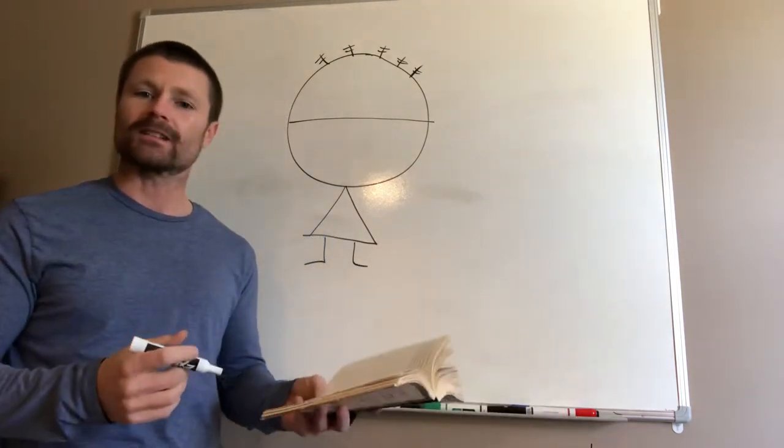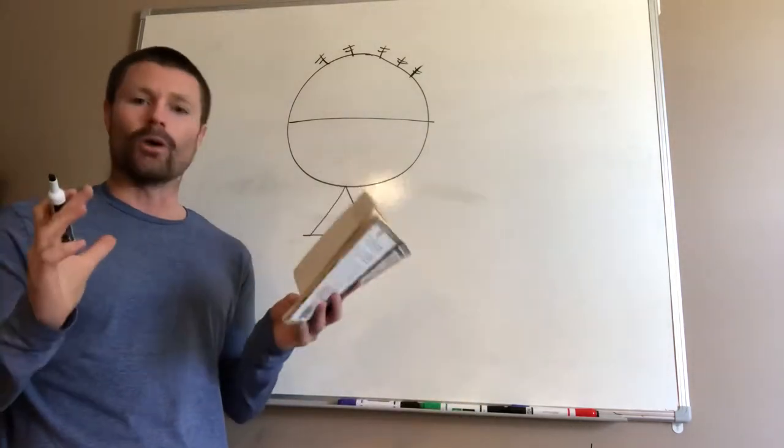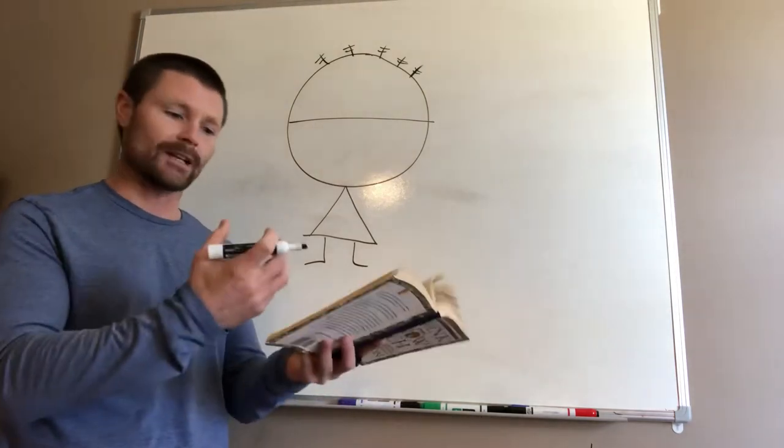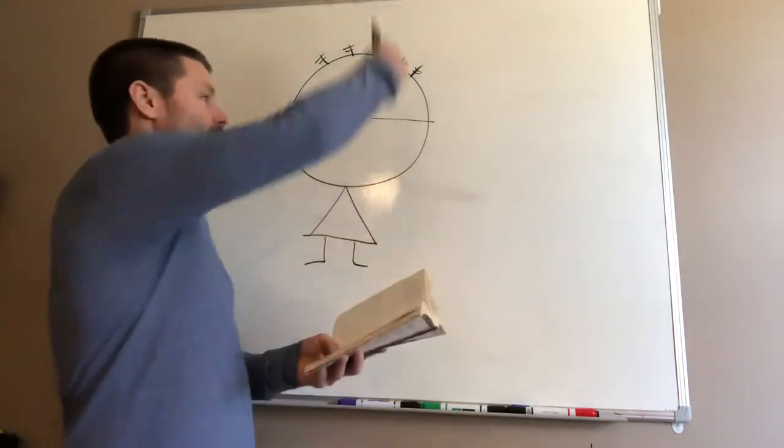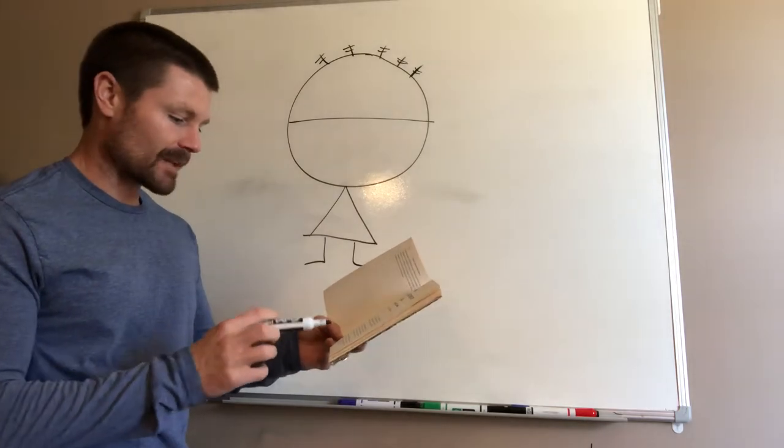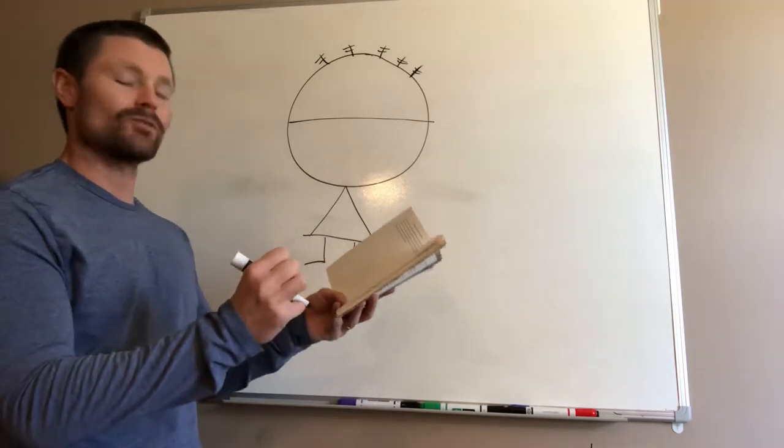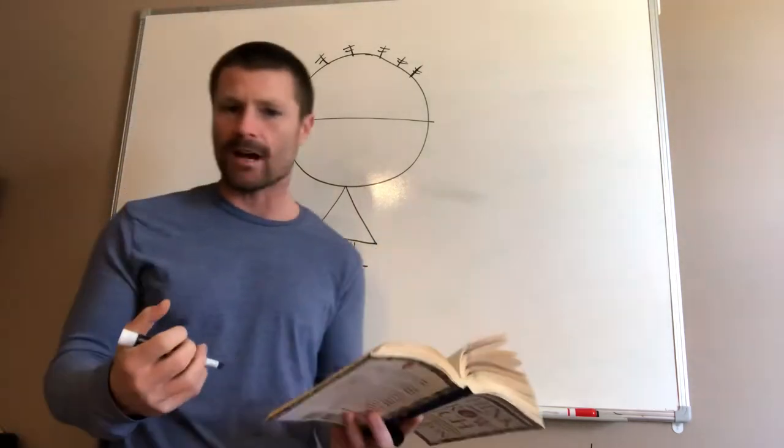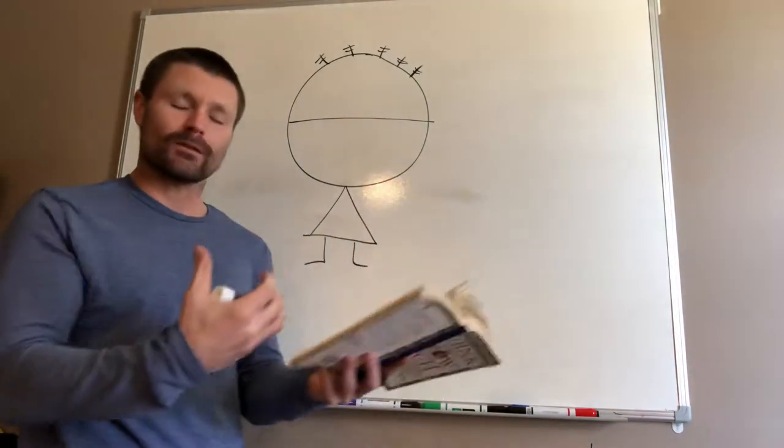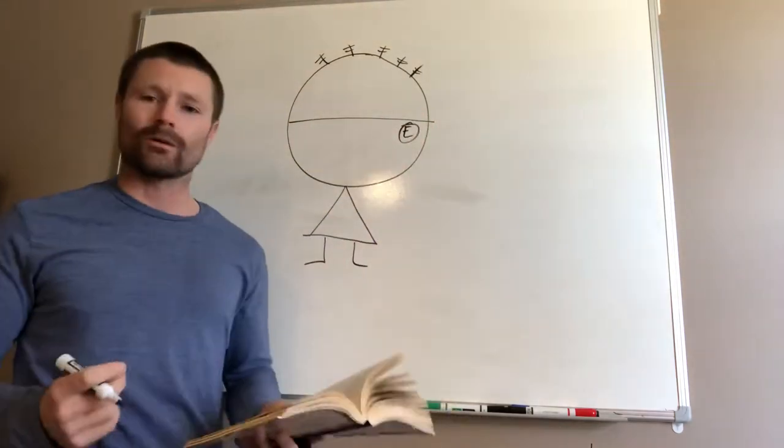You can voluntarily plant into your subconscious mind any plan, thought, or purpose. When we go back to the chapter on desire and we look at the six steps, that's exactly what we're doing. Through habit, we're taking our goal, we've written it out. If you followed the six steps, you're going to write it out and we're looking at that every day. Over habit, we're planting that into the subconscious mind. But I want you to get this: he says that the subconscious mind acts first on the dominating desires that have been mixed with emotion.